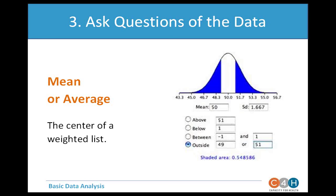A chart showing a normal curve: when interpreting information, especially in inferential statistics, we reference this shape frequently. It gives the look and feel of what a weighted list might look like when charted — the classic bell curve shape.